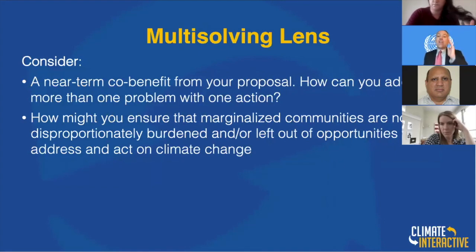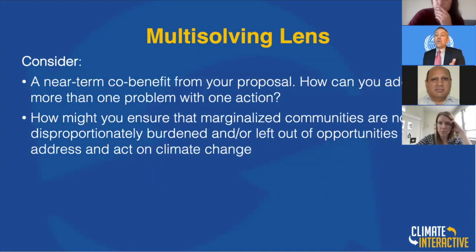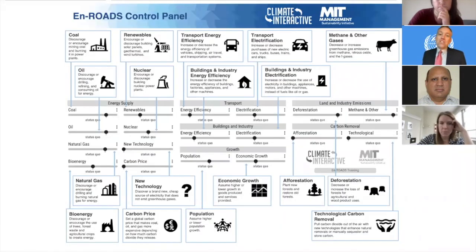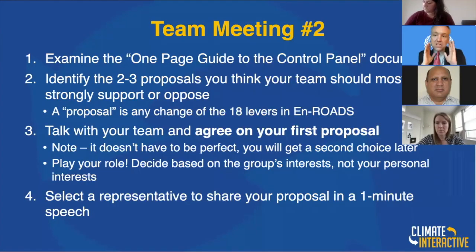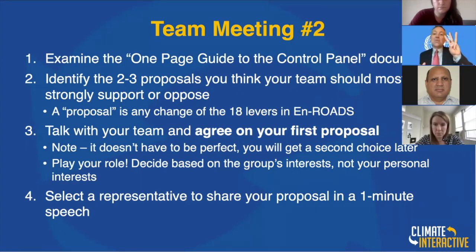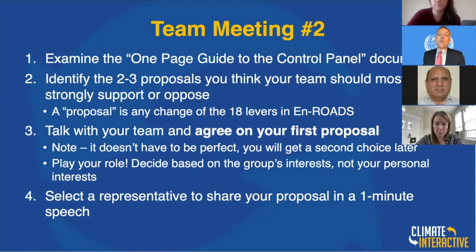Along the way, think: are there co-benefits to this action? Think about how to make sure you don't hurt marginalized communities by implementing whatever you're doing — we want you to multi-solve. You're going to look at the document and pick the top three things as a team that you really want to promote. But also, what is your number one? You're going to pick a person to propose that one thing in a 60-second presentation to everybody.